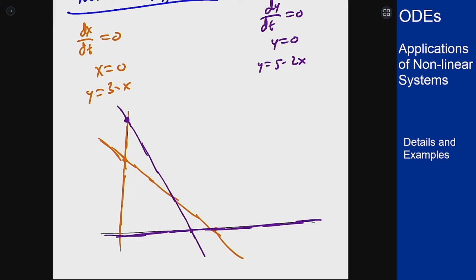As expected we see four equilibrium solutions where the purple and orange lines cross. One up here at 0,5, one at the origin, one over here at 3,0, and then the crossing point here which will be at 2 comma 1.